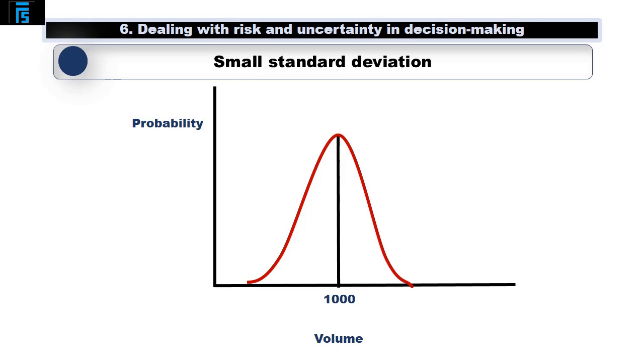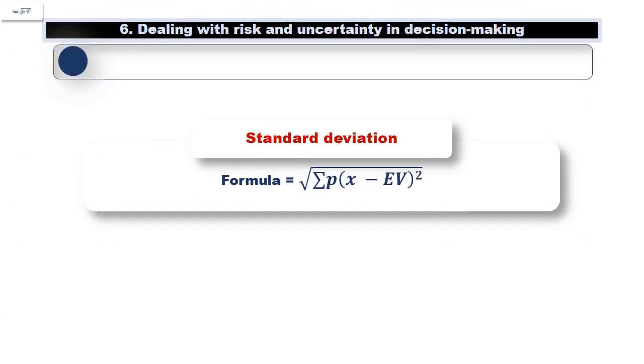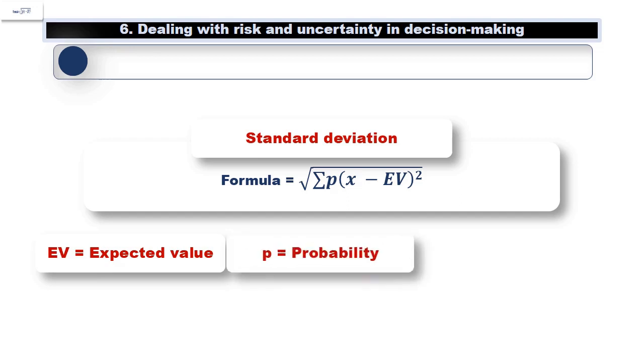The standard deviation is calculated using this formula. Where EV stands for expected value or average. In our example, this is 1000 yogurts. P is probability, and X is a possible outcome.